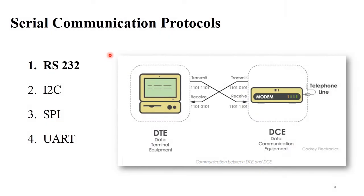The next point is serial communication protocols. In your syllabus there are four serial communication protocols: RS-232, I2C, SPI, and UART. In this session we will discuss RS-232 protocol. In this image we can see the basic concept of RS-232 protocol — one side is the transmitter and the other side is the receiver, meaning a computer and a modem. The computer transmits data to the receiver bit by bit in serial format, and the modem receives data and sends a reply back to the computer in serial mode. For this serial communication purpose, RS-232 protocol is used.